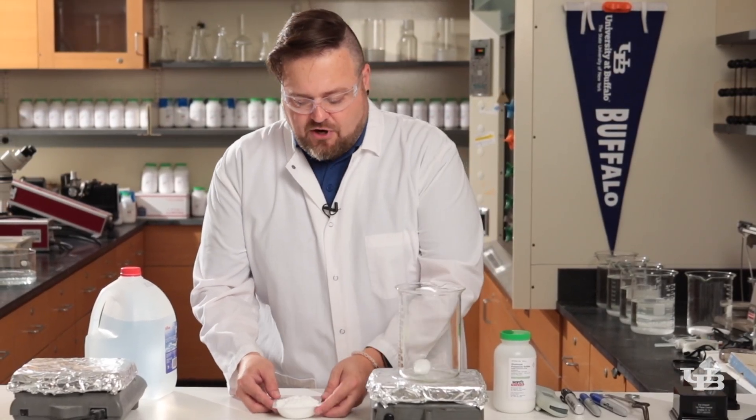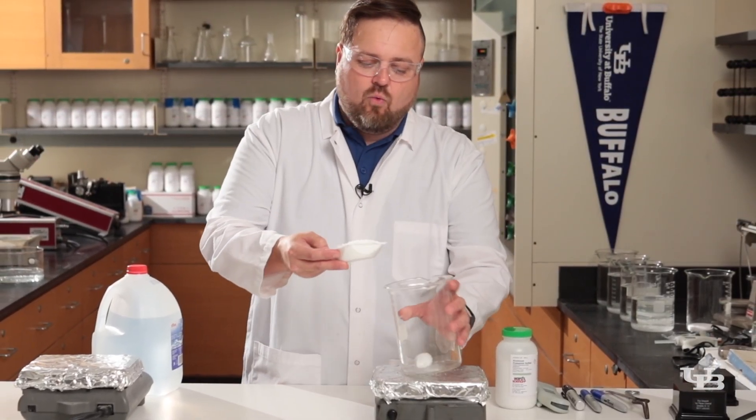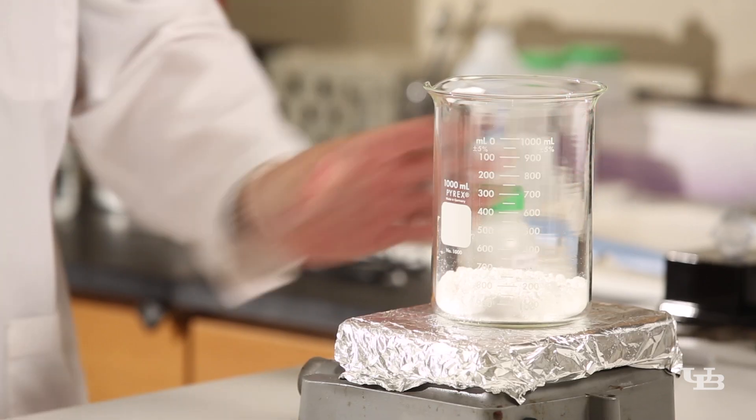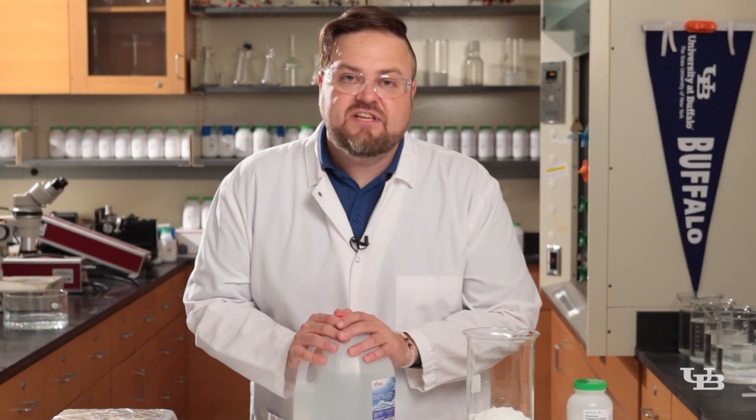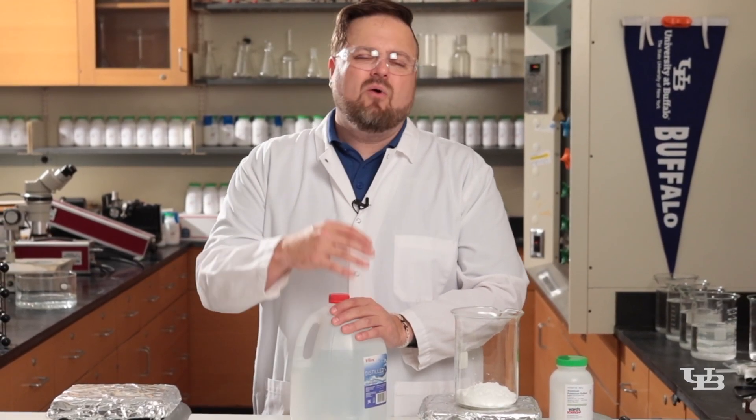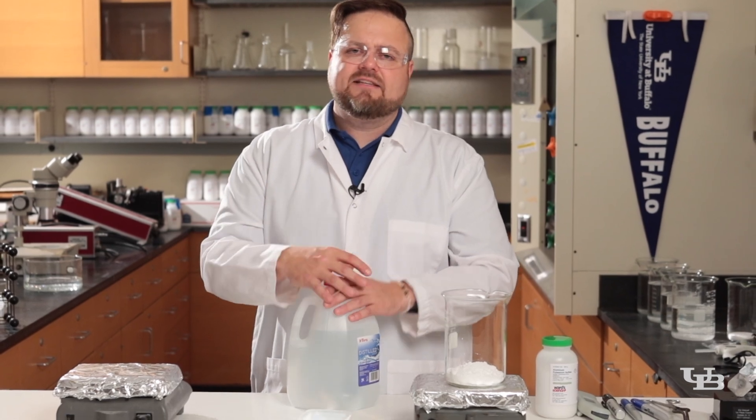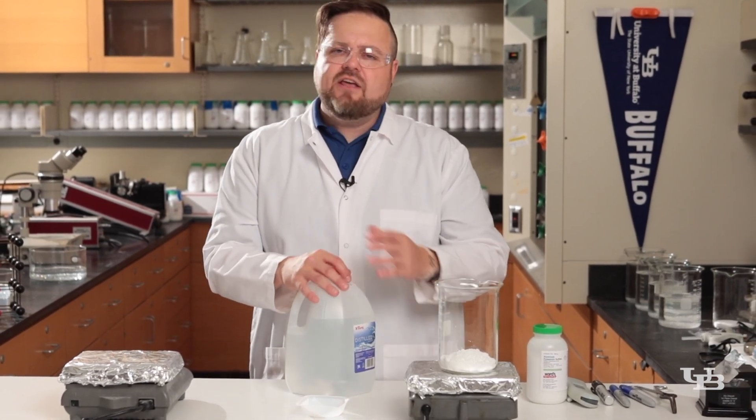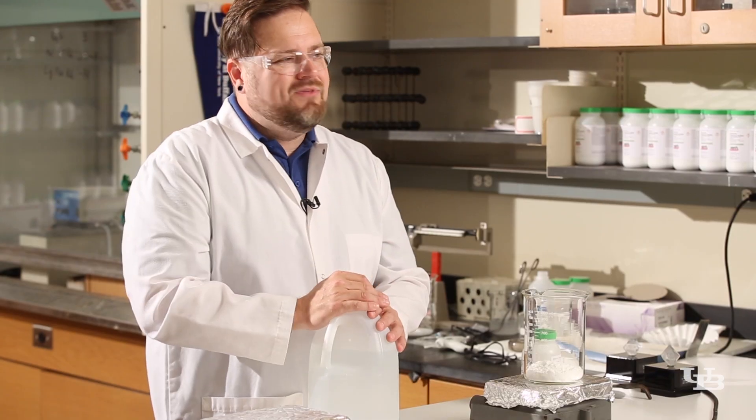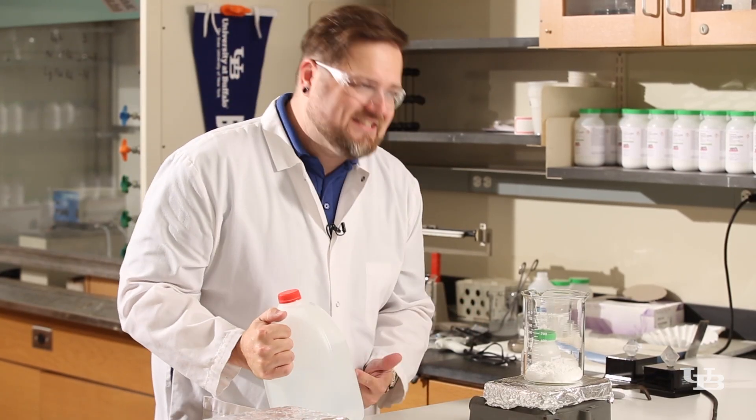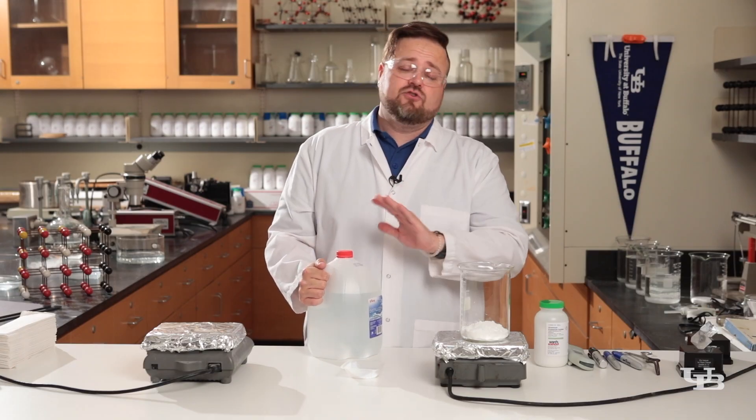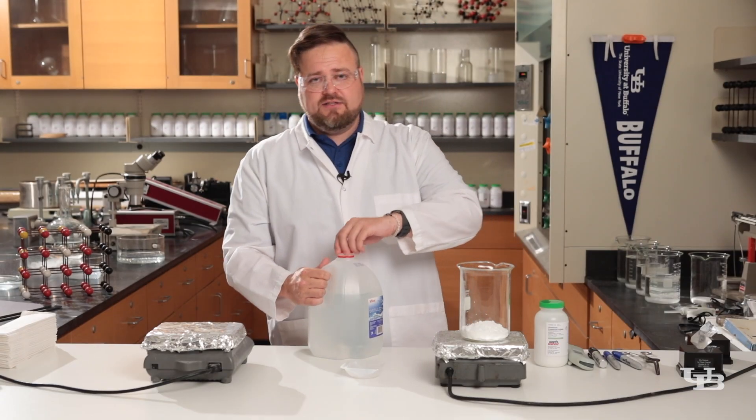So we have our stir bar. We'll go ahead and add 100 grams of alum, and now what we're going to do is add water. Now what type of water to use? You could go to your faucet and use tap water. However, tap water contains a lot of minerals and ions and things that can potentially interfere with the crystal solution. For folks at home, you can go to the store and pick up a bottle of distilled water. Use distilled water, not drinking water. Again, drinking water is going to have minerals and ions and things like that.